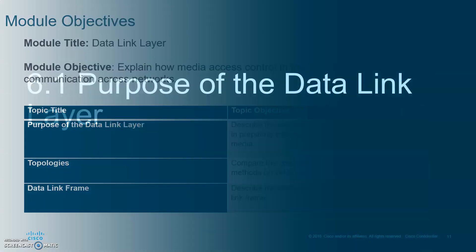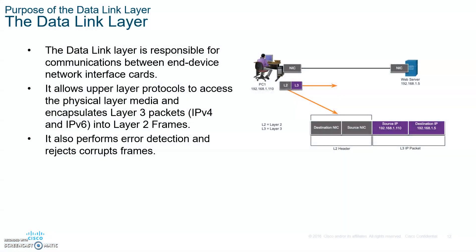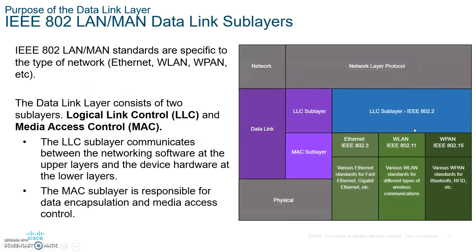What is the responsibility of the Data Link Layer? The Data Link Layer is responsible for taking the packet, encapsulating it, and placing it onto the frame — the Layer 2 packet. You're always placing the destination MAC address and the source MAC address on the frame. These are the Layer 2 addresses, as opposed to the Layer 3 IP addresses.